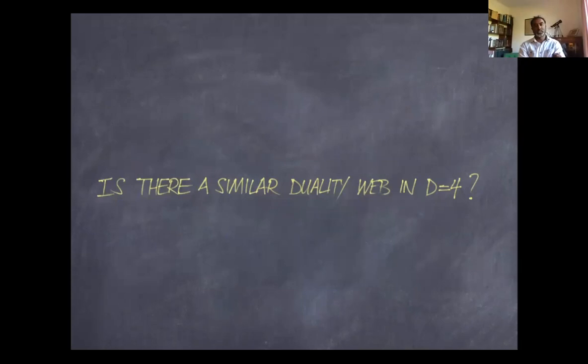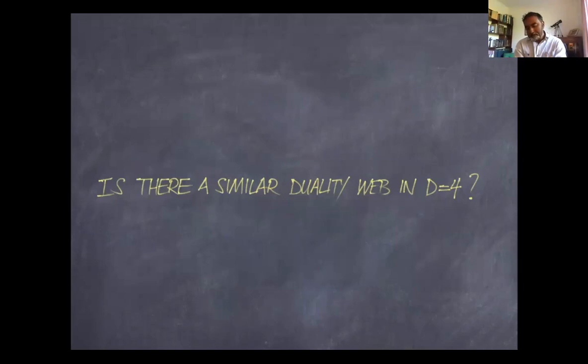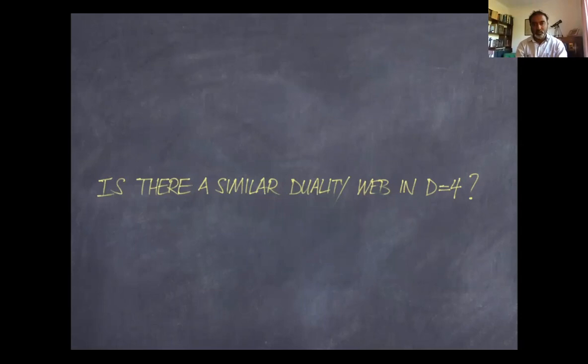The central question I'd like to ask in this talk is: if you have a three-dimensional duality web that descends by dimensional reduction to a two-dimensional duality web, is there a possibility that you could lift the three-dimensional duality web to four dimensions? Is there a similar duality web of boson-boson, fermion-fermion, and fermion-boson dualities in four spacetime dimensions — that is, in 3+1 dimensions?